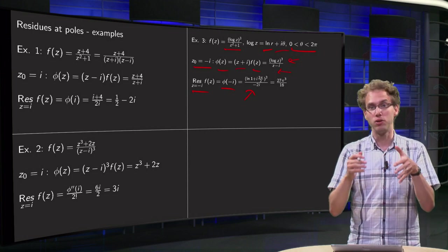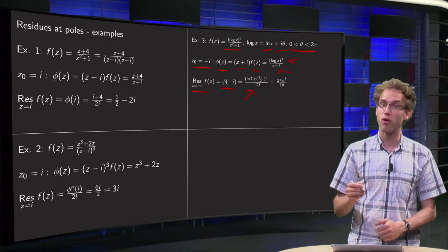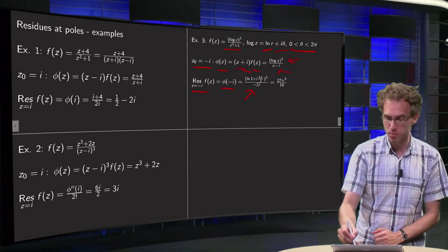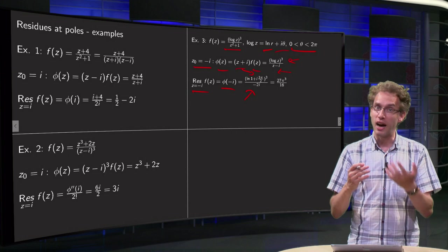We get the log of minus i cubed. It's the log of minus i. It's the ln of the norm, so it's ln of 1. Plus i times the argument.